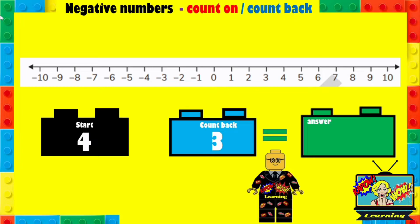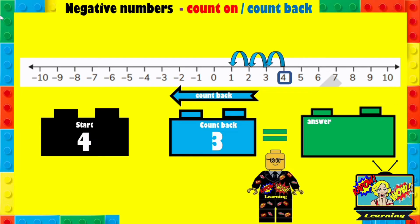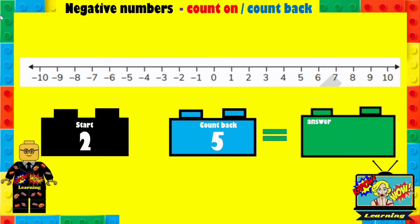Here's another one. This time we're starting at 4 but we're counting back 3. What is the answer to this? You can pause and then play it. So we start at 4, but this time we're counting back, so we're going to go left 3 places: 1, 2, 3. So your answer should have been 1.